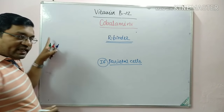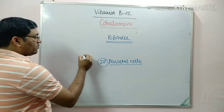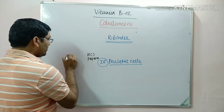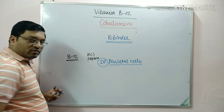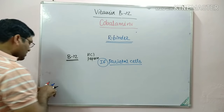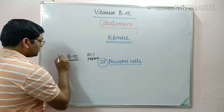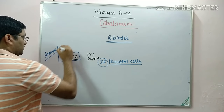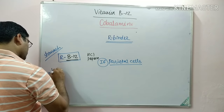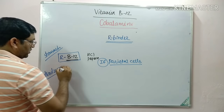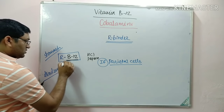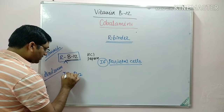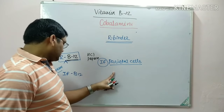When we take dietary Vitamin B12, with the action of HCl and pepsin there is release of B12 in the stomach from food. This B12 binds with the R-binder in the stomach and is transported to the duodenum, where with the action of proteases this complex is broken down. Here, B12 gets attached to the intrinsic factor released by the gastric parietal cells.